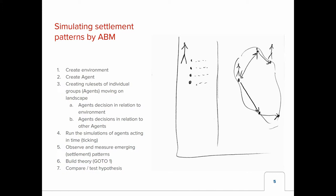There has been a lot of discussion already about agent-based models. Basically, what we create while simulating settlement patterns is an environment, an agent, and some rule sets. These are mostly composed of agent decisions regarding each other and regarding the environment. Then simulations are run, observed, measured, theories built, and in good cases there is also comparison and hypothesis testing.